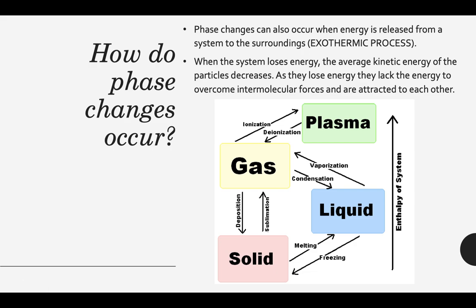Phase changes can also occur whenever energy is released. Whenever energy is lost by the system to the surroundings, that's an exothermic process — energy is exiting the system. As the energy is lost, the kinetic energy of those particles decreases, they get cooler, start moving around less, and lack the energy to overcome intermolecular forces. They get attracted to each other, become closer, and move closer to the solid phase.